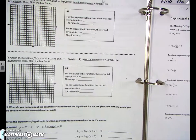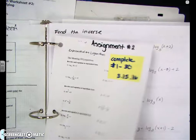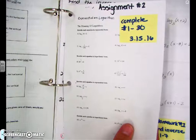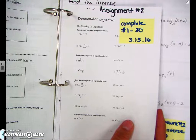We move to assignment number two. Assignment number two is a small sheet of paper, half a sheet of paper. You needed to complete one through thirty. We finished this on March 15, 2016.